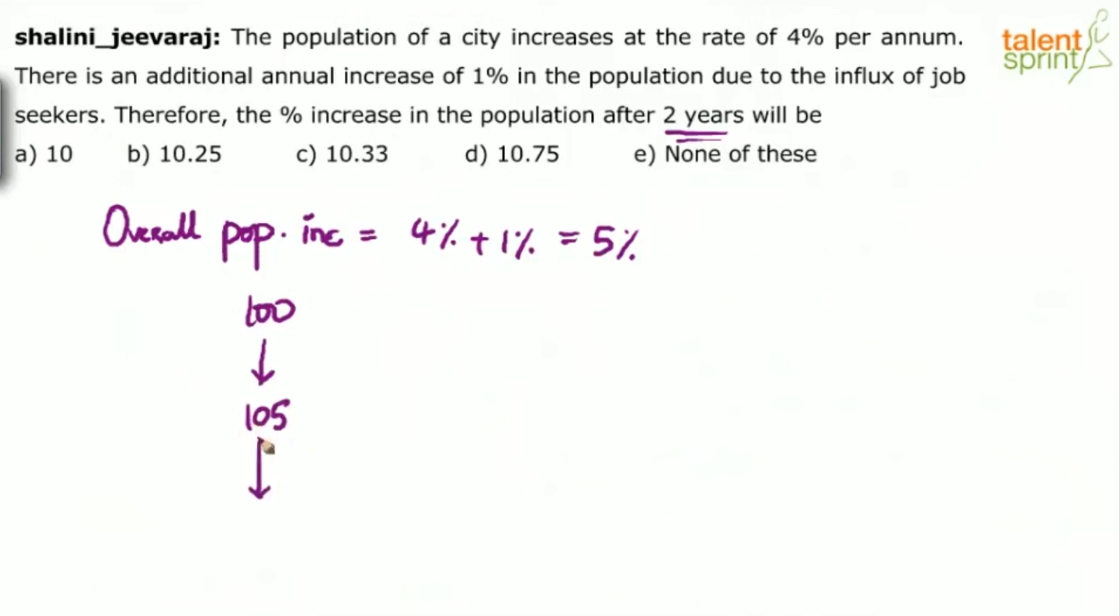After second year, at the end of second year, it will not become 105 plus 5. It will be 105 plus 5% increment. But when you do plus 5% here, it will not become simply 105 plus 5. It will be 110.25.